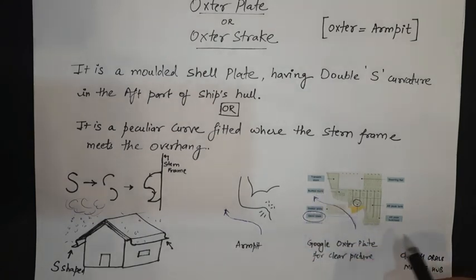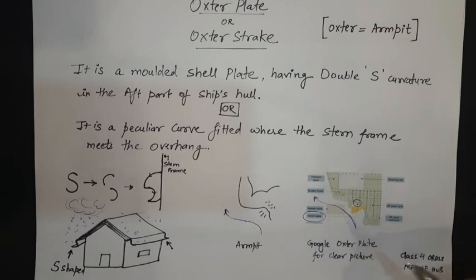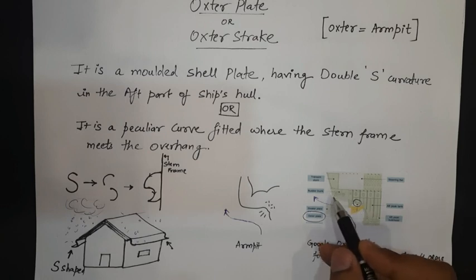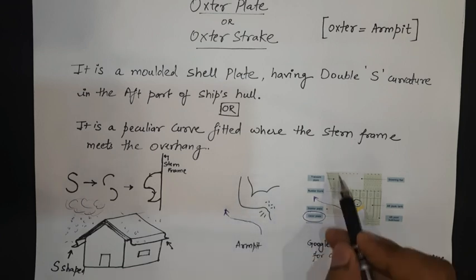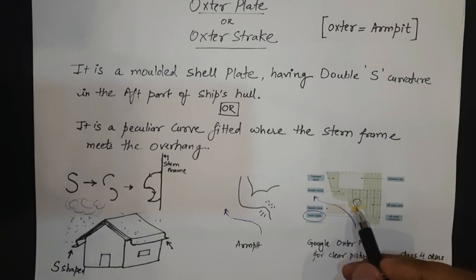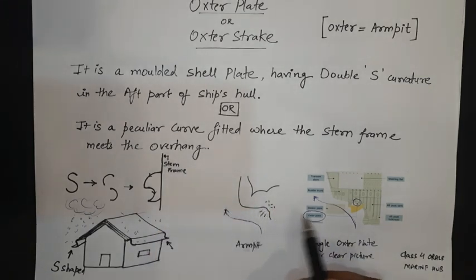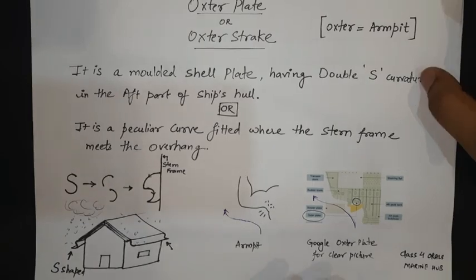You can see here, this is the oxter plate diagram. You can also Google this image for better clarity. This is the oxter plate and this is the oxter part — like the oxter in the human body. Similarly, this part has a similar shape. So the oxter plate connects the stern part, the stern frame and the overhang. This is the overhang. The connection is done by the oxter plate.